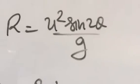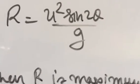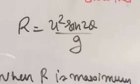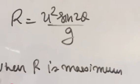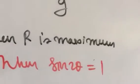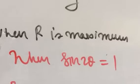We know that range R equals u square sine 2 theta upon g. When range R is maximum, u is given, g is given. So sine 2 theta is a variable which is a ratio of perpendicular upon hypotenuse which we have to do maximum.